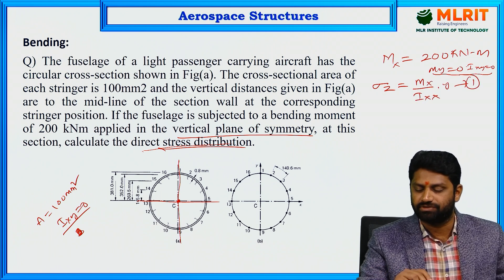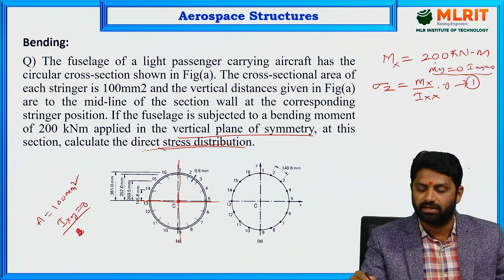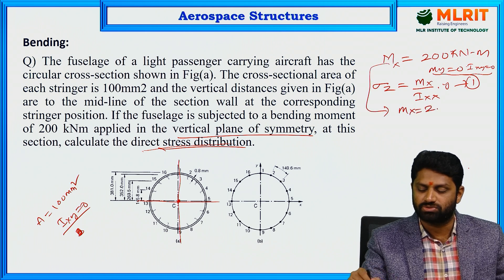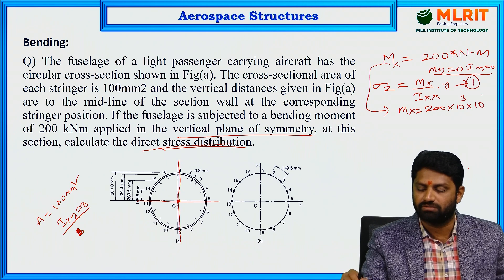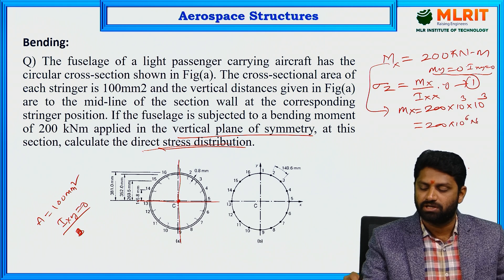MX is given as 200 kilo-Newton meters. Converting units: 200 kN·m = 200 × 10⁶ N·mm. This is the value of MX to be used in the stress formula.